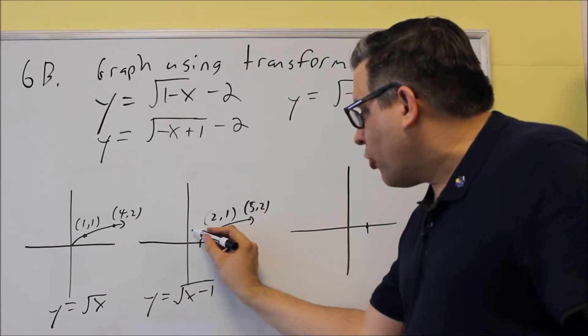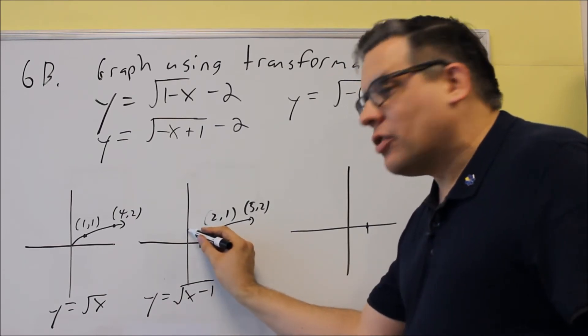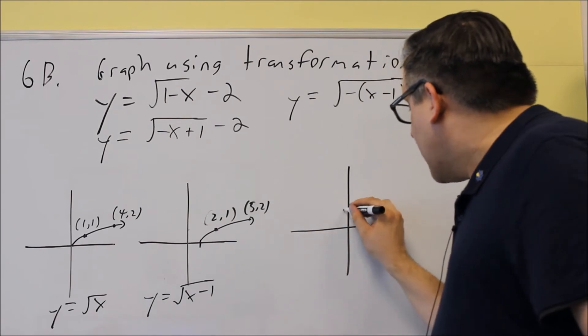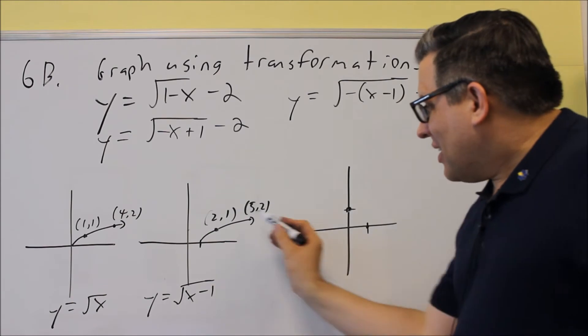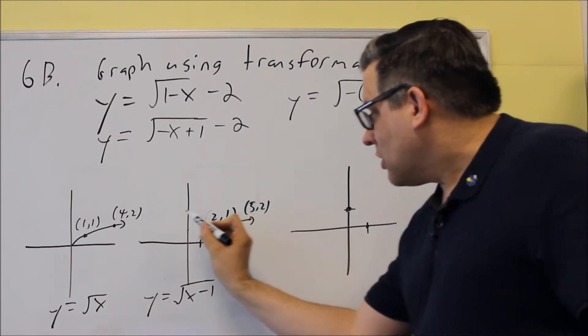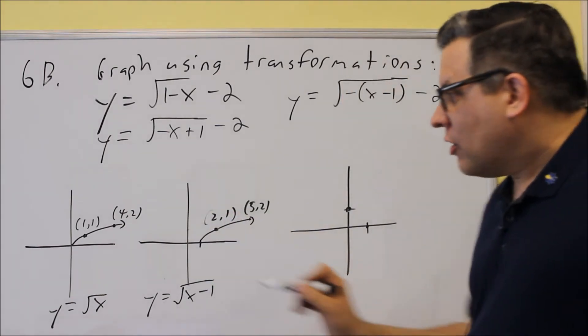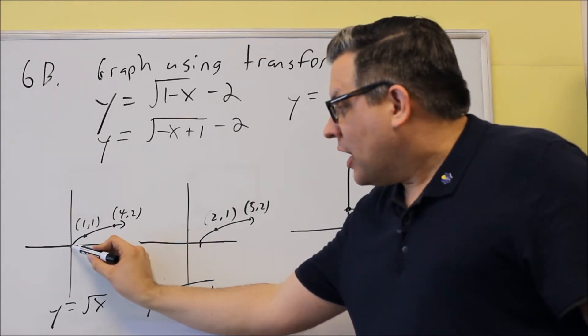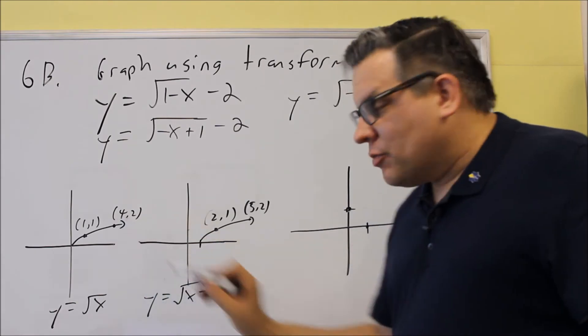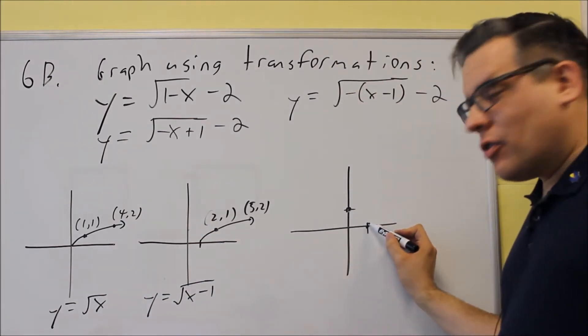So it was at (2,1), and what will happen is that point is going to get reflected over to this point here. So it's now going to go through this point, it's going to go through (0,1). Likewise, the (5,2) gets reflected over as well. Now the way the base graph works is you go 1 to the right and up 1, and you go 4 to the right and up 2. We can do the same process for this.